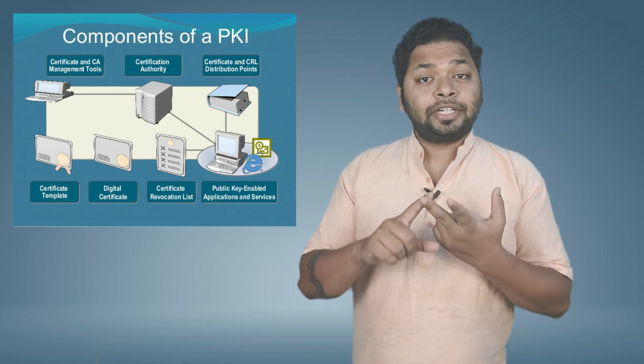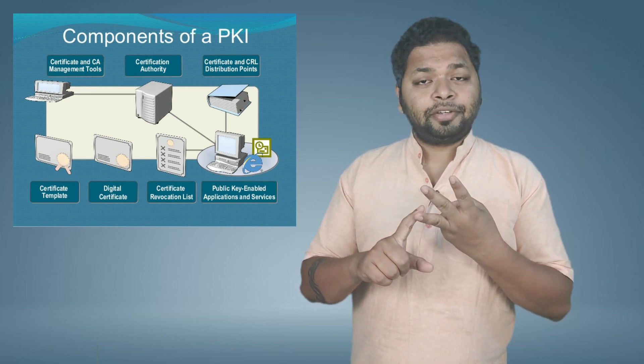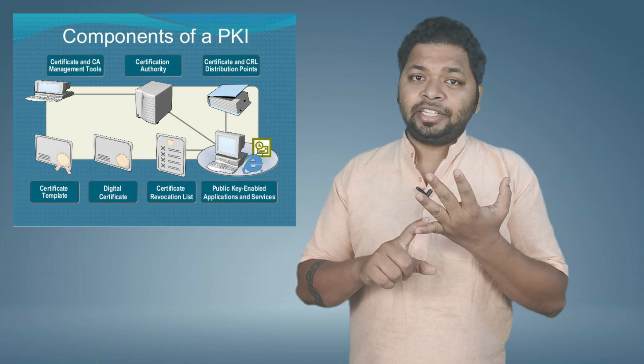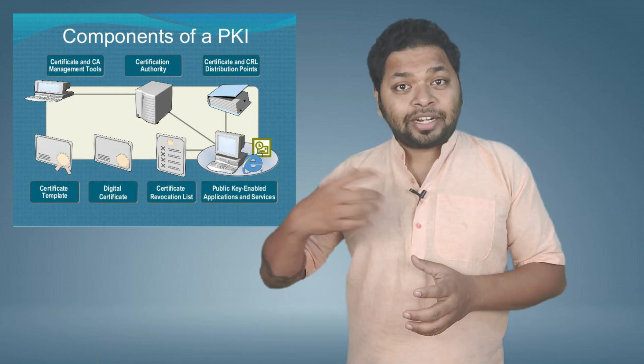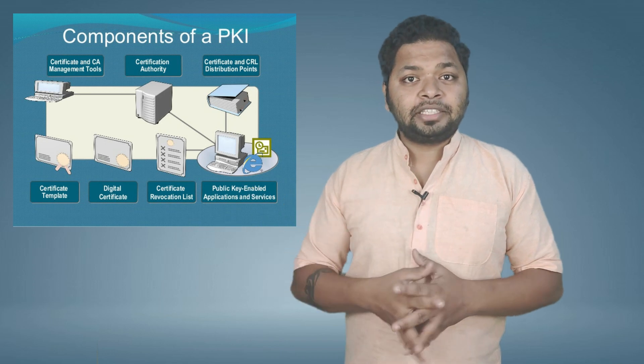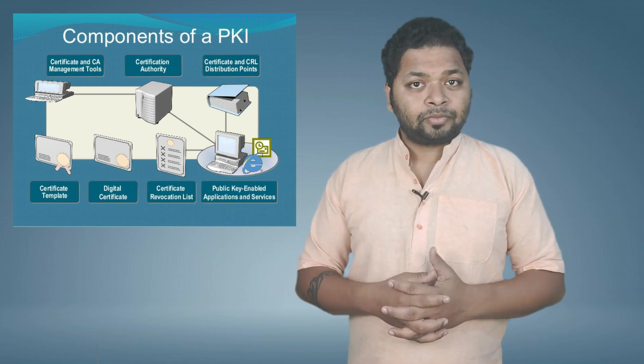PKI also includes the CA's private key, the Hardware Security Module which provides security to store private keys, and the database where it stores the certificates. These are the major components of PKI. We'll discuss CA, CRL, and OCSP terminologies shortly. Now let's discuss digital certificates.